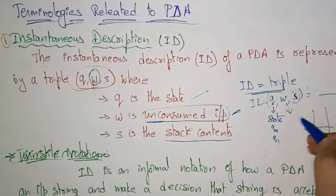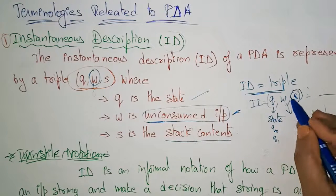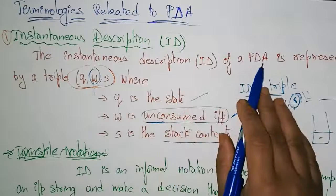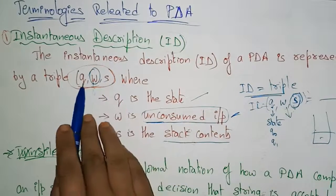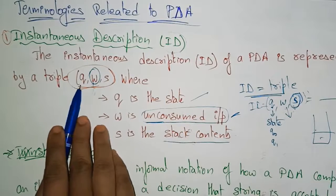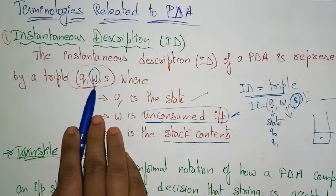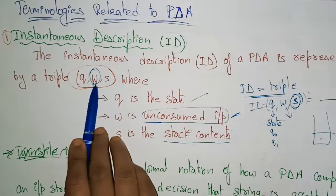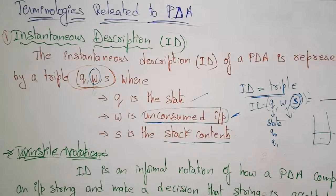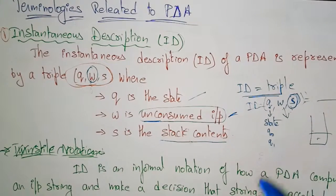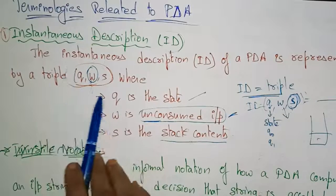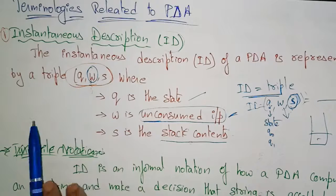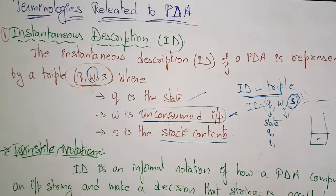And s is the stack content — whatever is present in the stack, starting from the top element down. This is the representation of the ID. The instantaneous description of a pushdown automata is represented by a triple, and this is the format: first q, which is the state; then w, the unconsumed input; and s, the stack content. Whenever you see a representation in three parts in a problem, that is an instantaneous description.